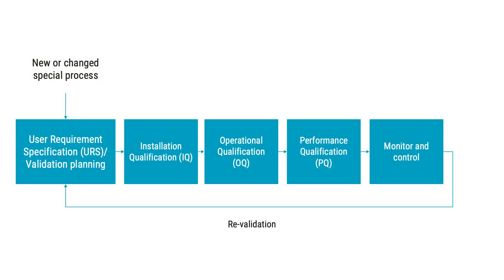We can't trust the initial validation forever. That's why manufacturers also need to monitor and control processes and revalidate them as appropriate. Some processes may require revalidation very often, whereas other processes would be revalidated more rarely. Standards also define the interval of revalidation for some processes — for example, revalidation of sterilization processes. And keep in mind that revalidation may be necessary when changes are made to a process.